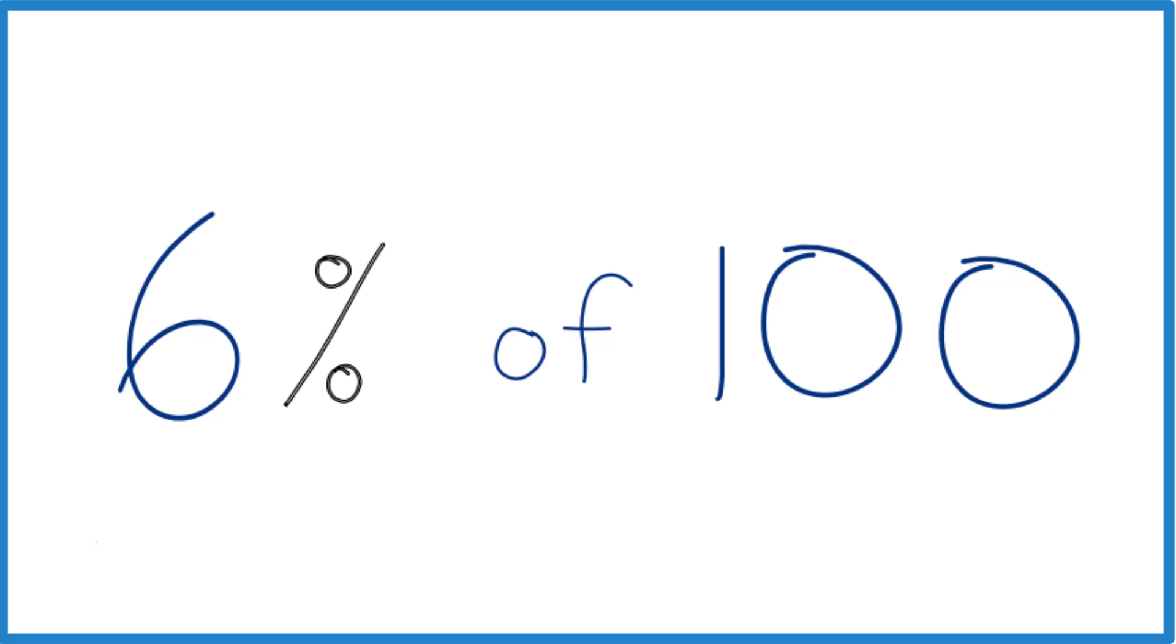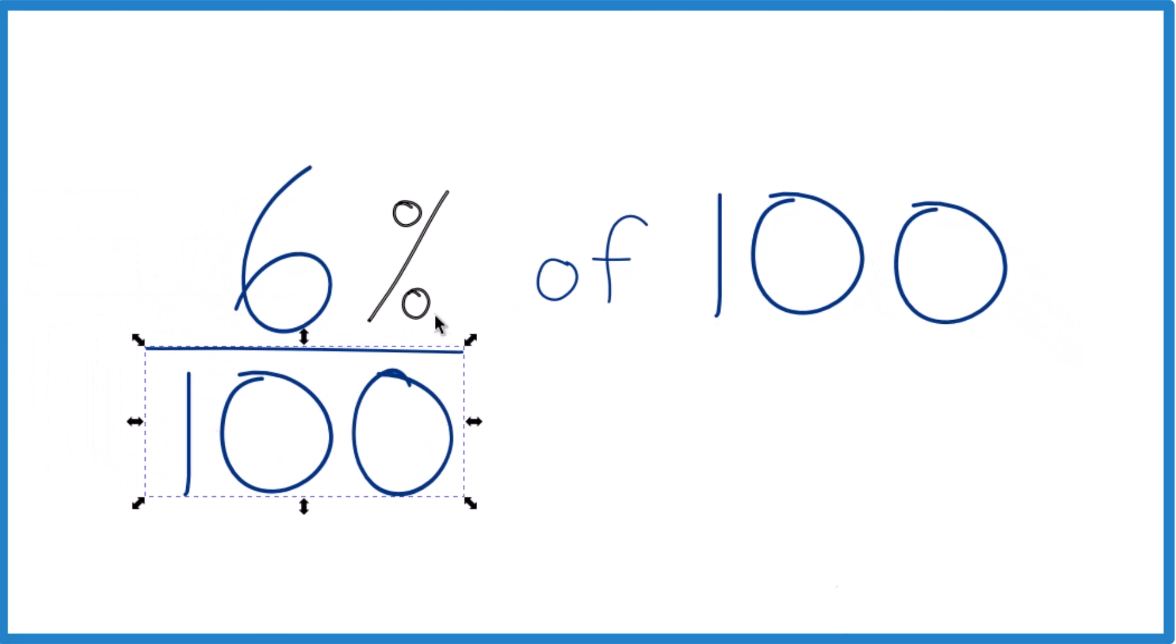When we're talking about a percent, we're talking per 100, like 6 per 100. So we have 6 parts out of 100. 6% of 100 is just 6.